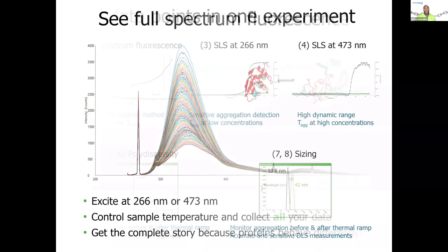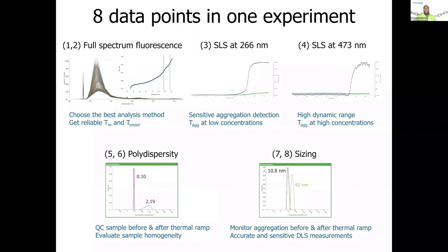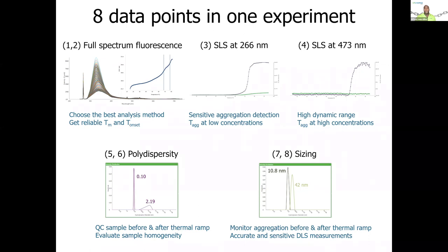If you run that one experiment — the Tm, Tag with DLS — you'll be able to collect as many as eight data points using only nine microliters of sample. That's a very powerful paradigm shift. Not only do you get your melting temperature and onset temperature, you get your temperature of aggregation for both low and high concentrations. You also have the ability to measure the size of your samples before and after the thermal ramp, and measure polydispersity — assessing the homogeneity or relative distribution of particles in your sample as you subject it to different conditions such as excipients, formulations, and storage conditions.